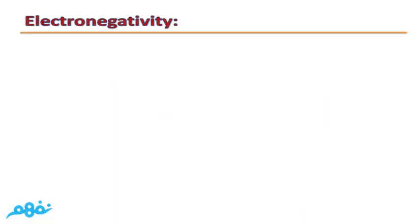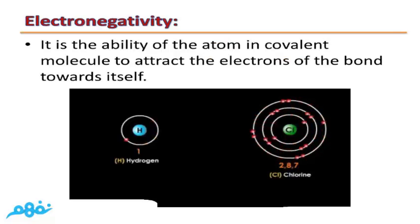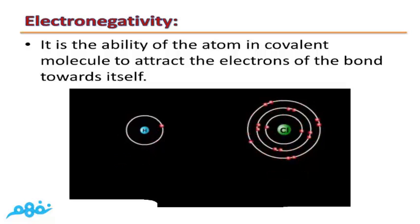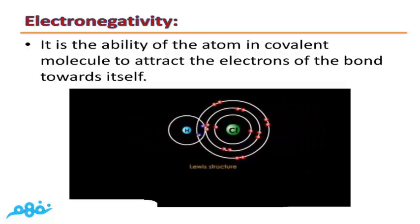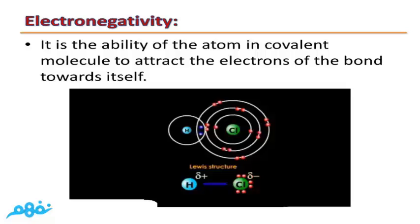The second property we will study is electronegativity. What is meant by electronegativity? It is the ability of the atom in a covalent molecule to attract the electrons of the bond toward itself. For example, the electronegativity of chlorine is higher than that of hydrogen, so chlorine will attract the electrons of the bond toward itself.